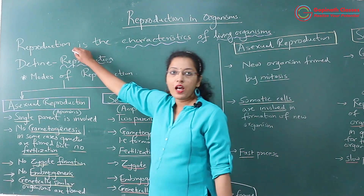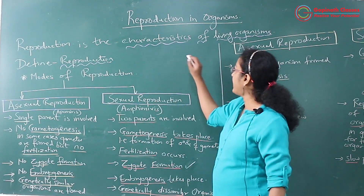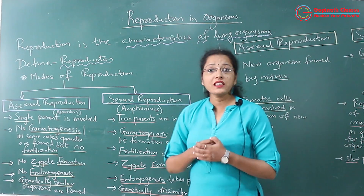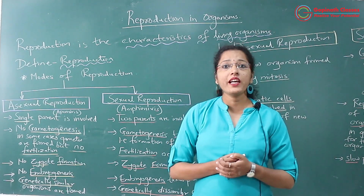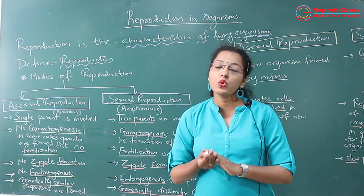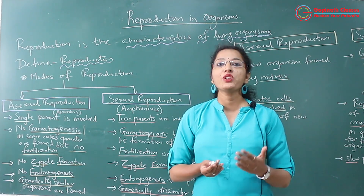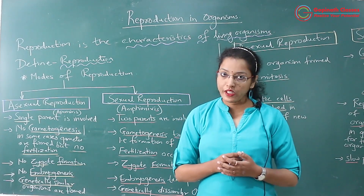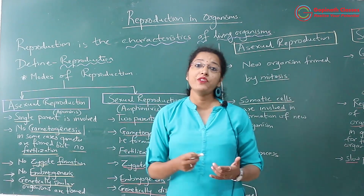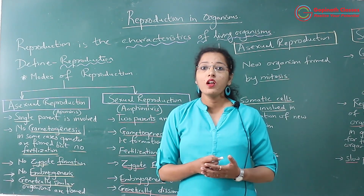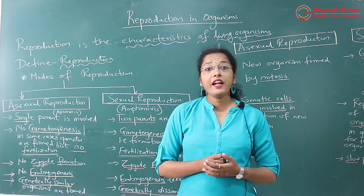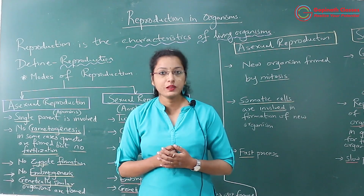Firstly, what is reproduction? Reproduction is the characteristic of all living organisms. Why is it the characteristic of all living organisms? Because reproduction leads to the formation of new organisms which belong to the same kind. Reproduction is the process in which similar kinds of organisms are formed which belong to the same species, and reproduction takes place for the continuity of the species.